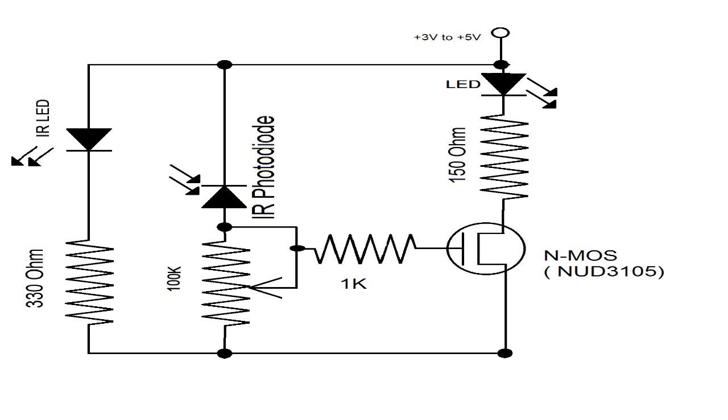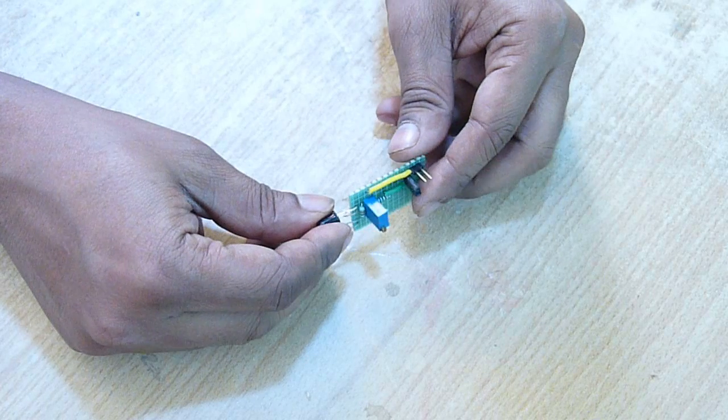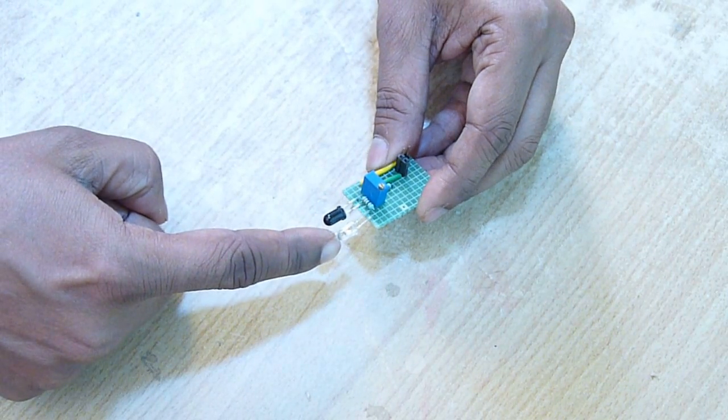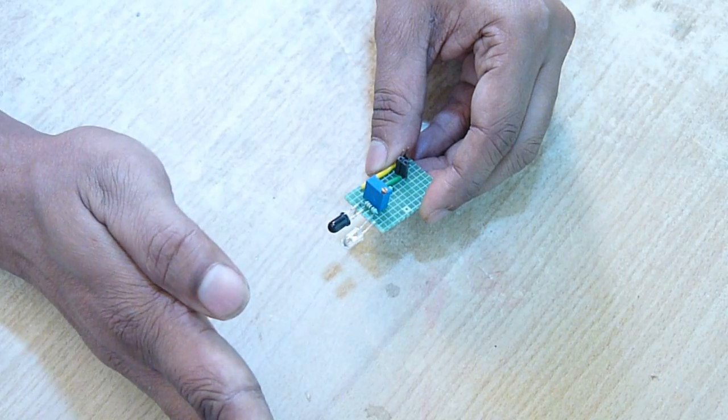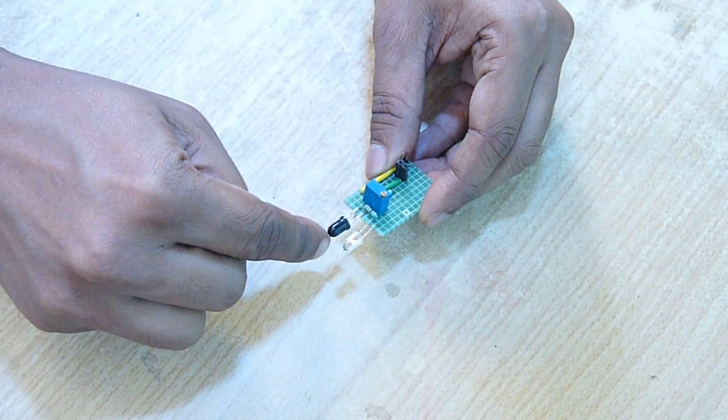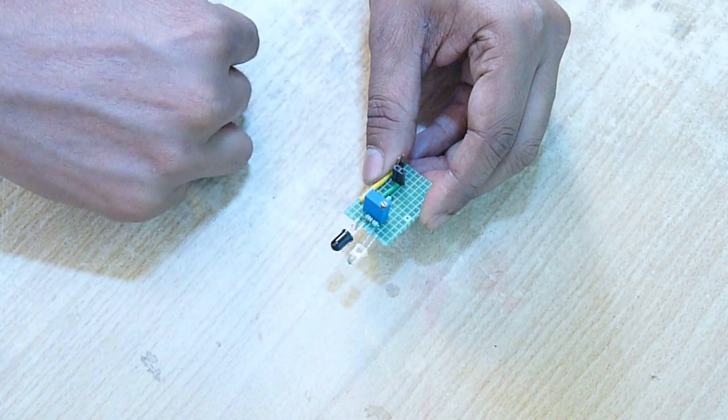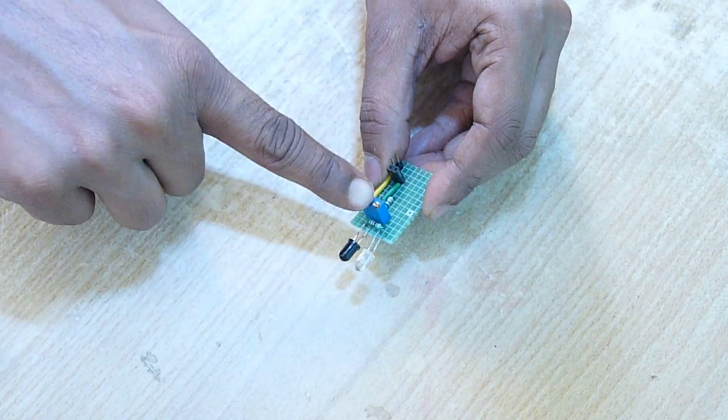I have used this circuit and connected all the components on a general purpose PCB. This IR LED will transmit infrared and get reflected by the nearby object to the photodiode. Thus its impedance will get changed and the voltage across the potentiometer will increase.